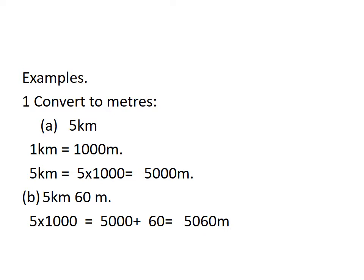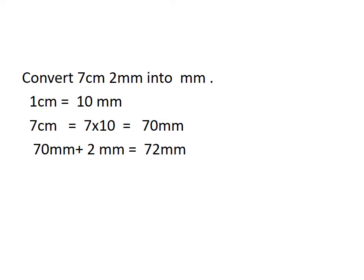Example 2: convert five kilometers sixty meters into meters. Five multiplied by one thousand is equal to five thousand, plus sixty, equals five thousand sixty meters. Now see one more example: convert seven centimeters two millimeters into millimeters. One centimeter is equal to ten millimeters, so seven centimeters is equal to seventy millimeters, plus two millimeters, equals seventy-two millimeters.